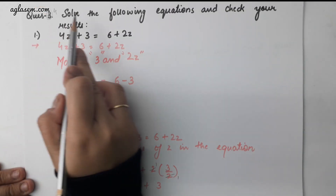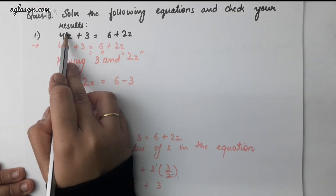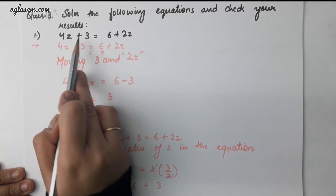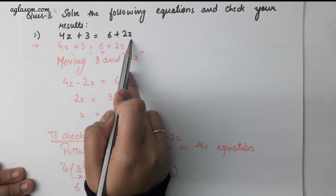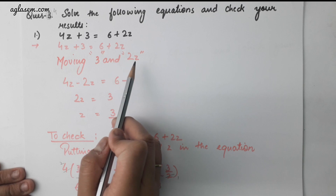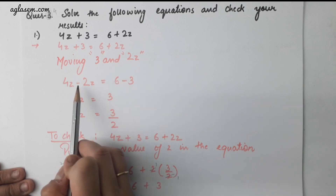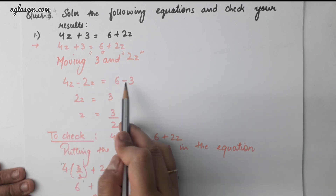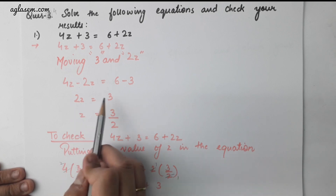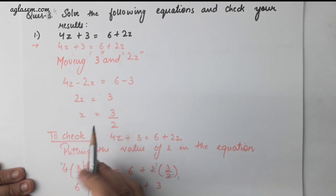Question number 4: solve the following equation and check the result. 4z plus 3 is equal to 6 plus 2z. Moving 3 and 2z, we get 4z minus 2z equals to 6 minus 3. So 2z is equal to 3 and z is equal to 3 by 2.